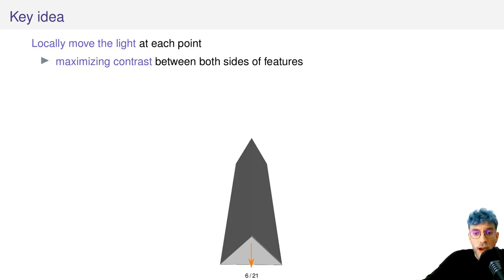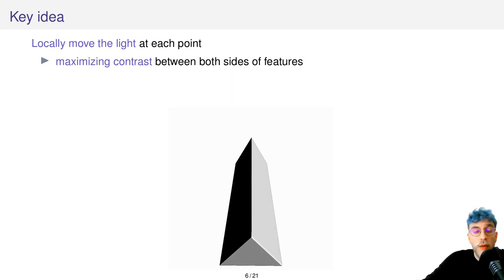The key idea behind our work is to locally move the light at each point of the surface in a way that will maximize contrast between both sides of the features to be enhanced. If you look at this triangular prism here, as it is lit frontally it is difficult to recover shape information. We would rather have something like that, that exhibits one bright side and one dark side.